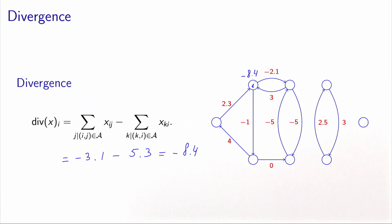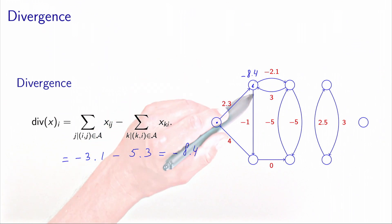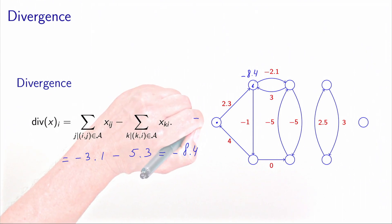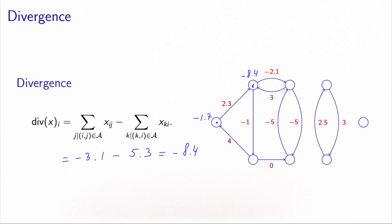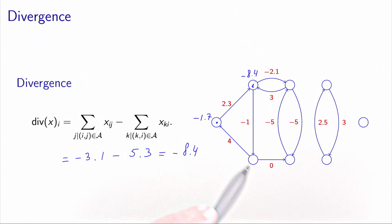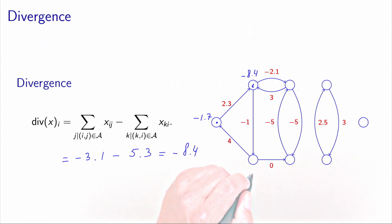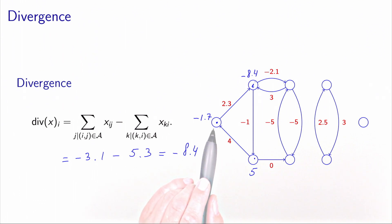We can do the same for all other nodes. If we take this node here, we have 2.3 units of flow exiting and 4 units entering, so the global value is negative — more flow is entering than exiting. At this other node, we have 4 units of flow exiting and minus 1 entering, so the total is 5. This node is injecting 5 units of flow into the network: 4 taking one direction and 1 taking another.